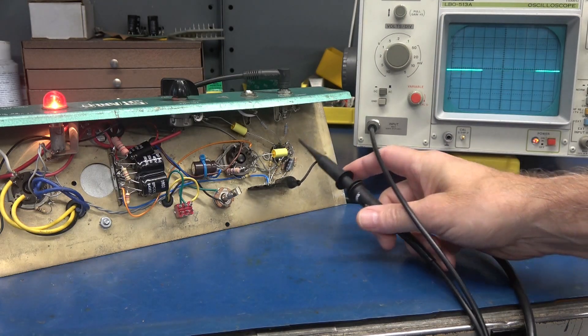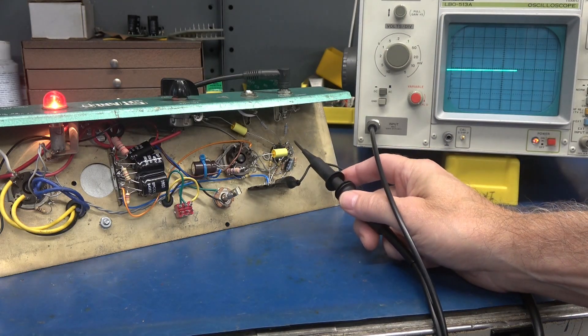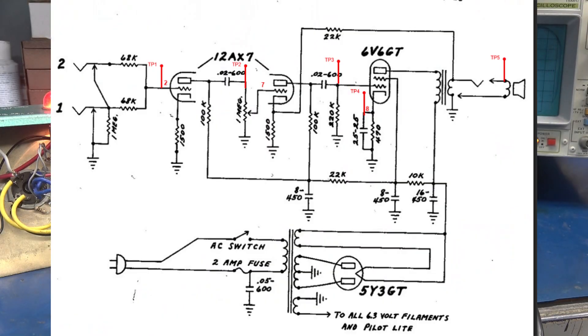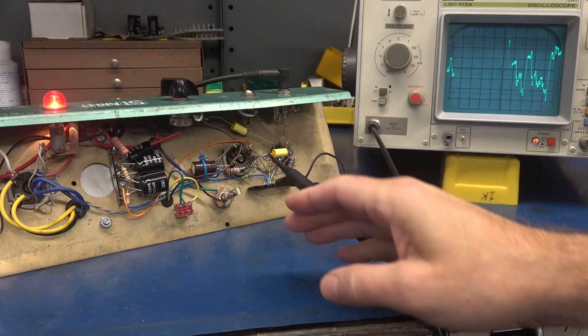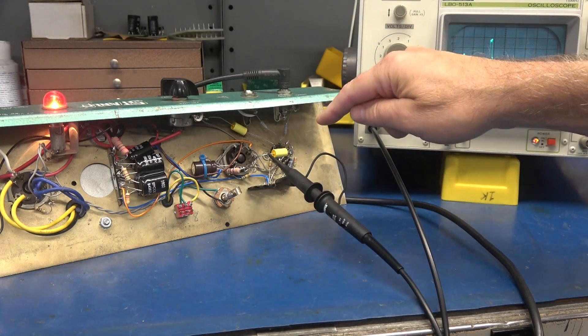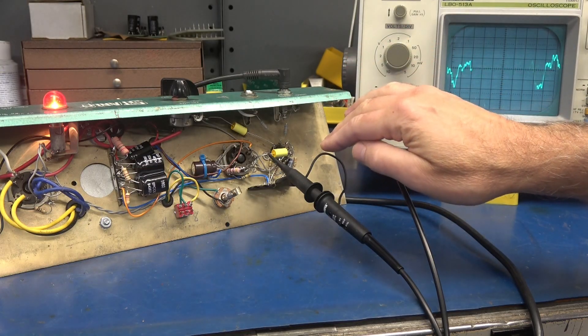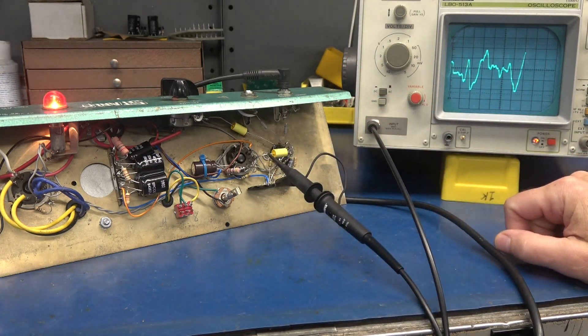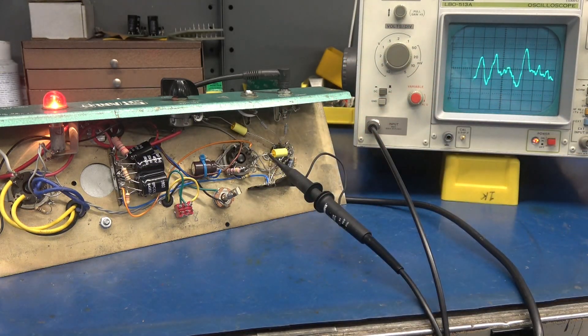All right, now test point three. This is the second triode. So we're going to have more output. See your scope went off scale, so we can turn that down. You can see we have a lot more gain now, and that is feeding the grid of the 6V6. So now we know that our input came in, we got through the first triode, now we're through the second triode of the 12AX7, and now we're in the grid of the 6V6. Let's go to test point four.